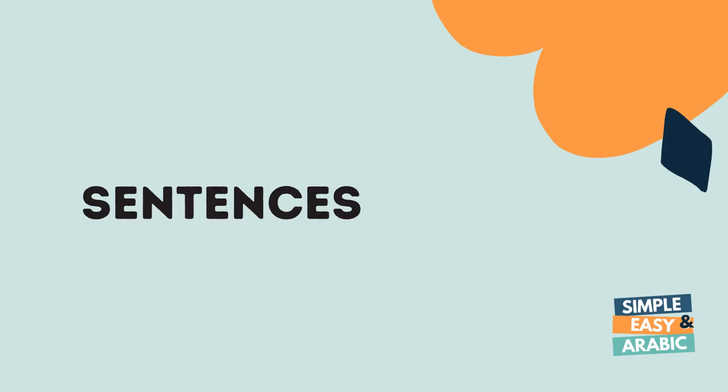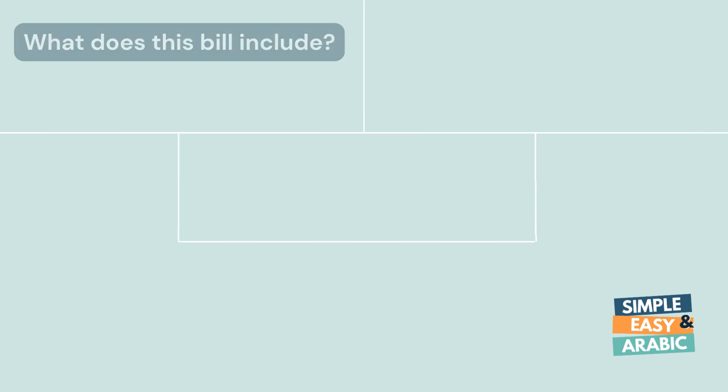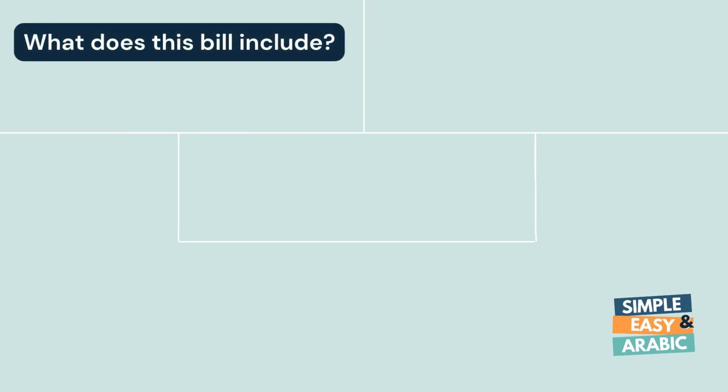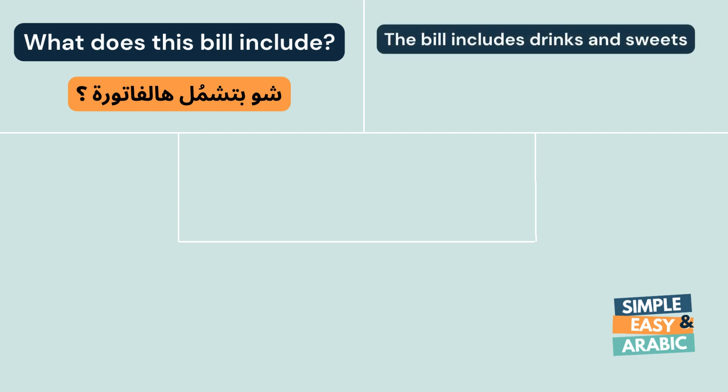These are the sentences that we're going to practice with today. What does this bill include? شو بتشمل هالفاتورة؟ The bill includes drinks and sweets. الفاتورة بتشمل المشروبات والحلويات.